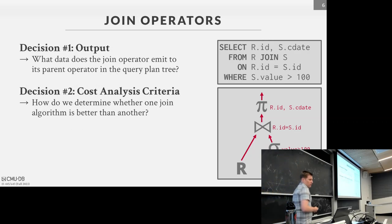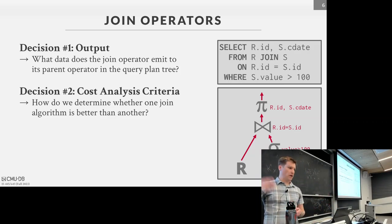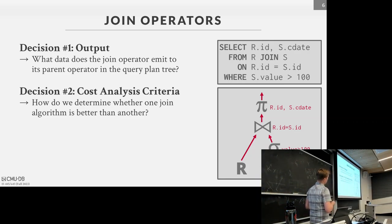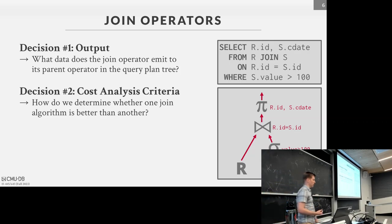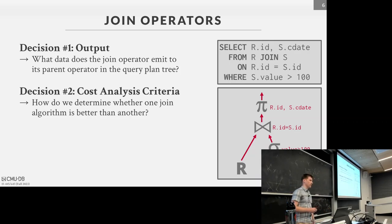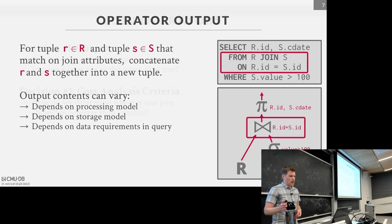When designing these join operators we have a couple of decisions to think about: what do we actually output from these operators to their parent nodes, and how do we reason about the cost of these operations? These are implementation design decisions — not things you change on the fly. When you're sitting down designing your database system you have to reason about what the inputs and outputs of these join operators are going to be.